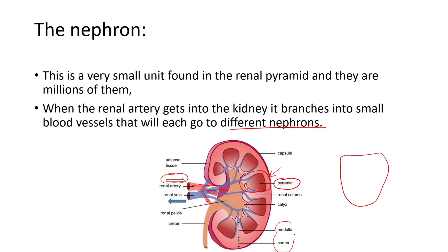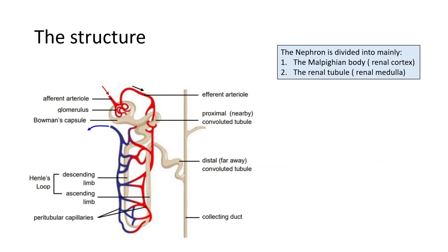The renal pyramid has both a medulla and a cortex. The top part of the renal pyramid is called the renal cortex, and the bottom part is known as the renal medulla. Always say 'renal' because that indicates something related to the kidney.